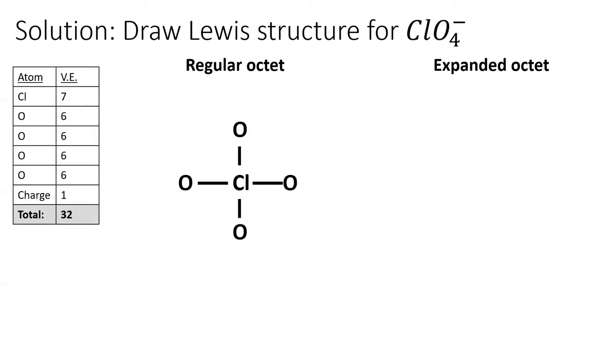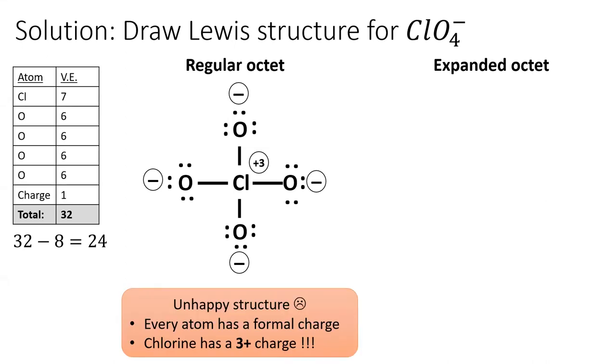We'll start the same way we always do, by counting valence electrons and forming bonds to the central atom. This leaves us with 24 electrons remaining. I'll distribute them in a way to give each oxygen a full octet. Then I'll assign formal charges. Look at those formal charges. That is an unhappy structure. Every single atom has a formal charge and the central chlorine contains a gigantic 3 plus charge.